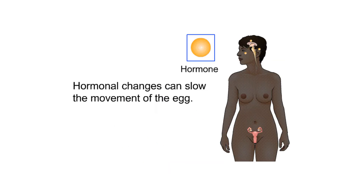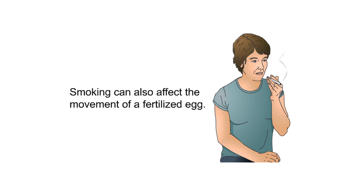Hormonal changes can slow the movement of the egg. Smoking can also affect the movement of a fertilized egg.